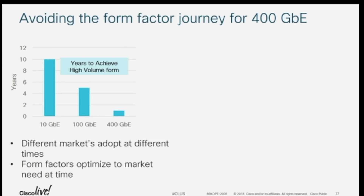Part of the reason the industry did these journeys is that when 10 Gigabit Ethernet was first deployed, it was a big form factor, and by the time it got to the high-volume one that everyone used, that took 10 years. Different markets adopt the technology — a service provider would typically adopt the highest speed first, and then 10 years later it reaches the data center. With 100 gig, that took five years. With 400 gig, the projections show data centers and service providers both looking to deploy at the same time.